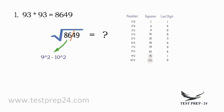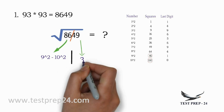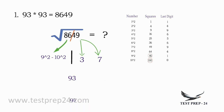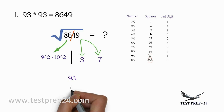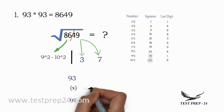Now coming to the second part: the last digit is 9. To get 9 as the last digit, either 3 square or 7 square works. So the possible answers are either 93 or 97. But you are not sure which one is correct. For that reason, take a number between 93 and 97, which is 95.